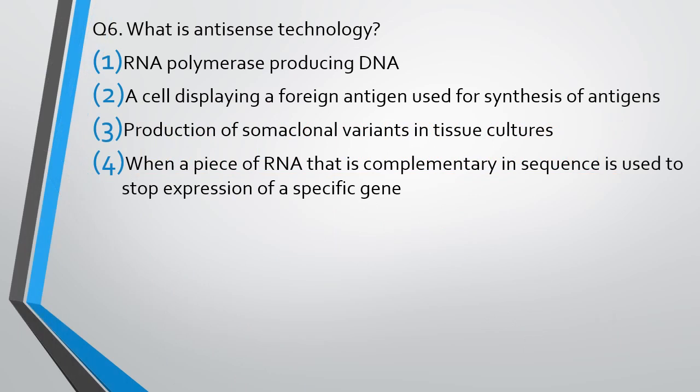Question number 6: What is antisense technology? Options: RNA polymerase producing DNA; a cell displaying foreign antigen used for synthesis of antigen; production of soma clones and variants in tissue culture; when a piece of RNA that is complementary in sequence is used to stop expression of a specific gene. The correct answer is option 4. A piece of RNA that is complementary to a given sequence is used to stop the expression of a particular gene. This technology is known as antisense technology.